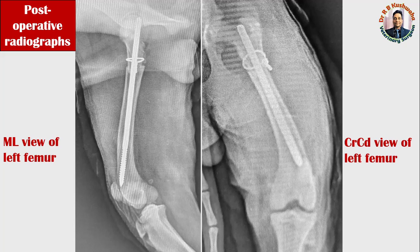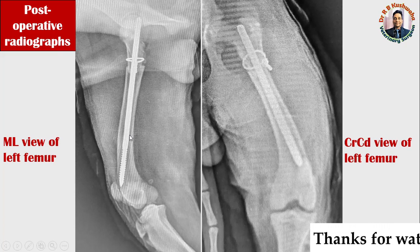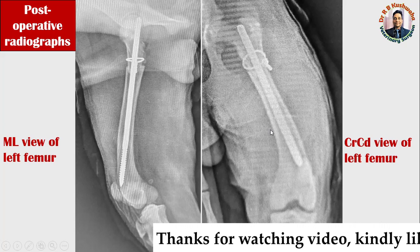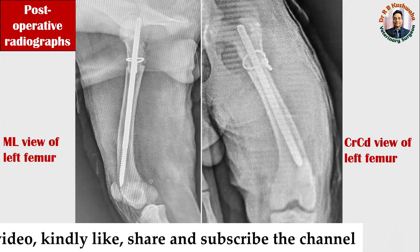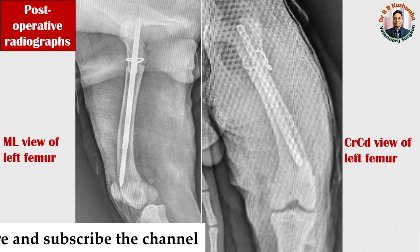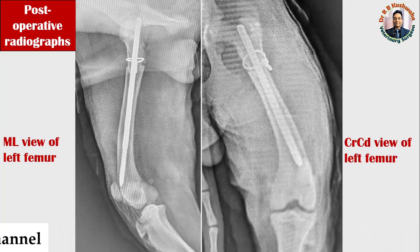This was about the subtrochanteric or proximal metaphyseal fracture — the proximal one-third femoral fracture of a young animal — and its management by one cerclage wire and an unthreaded intramedullary pin using the Steinmann pin. Thank you very much for watching the video. If you like this video, kindly share it with your friends and subscribe to the channel if you have not already. Thank you very much.